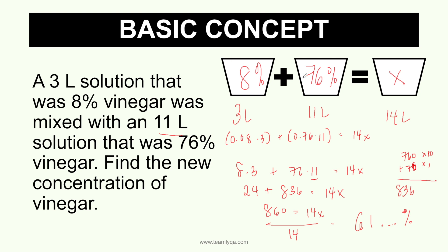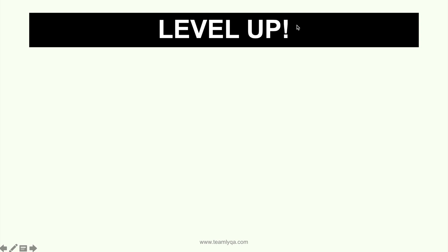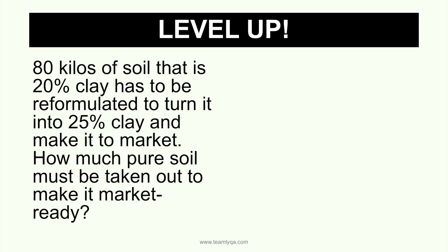What I want you to understand is that when we use the plus sign in the formula, it's because you're literally mixing two things together. The 3 liters and the 11 liters are being combined, and the result is a bigger total amount — because the two were joined together. Now, why is this important? Because when it comes to reduction problems, the situation is different.